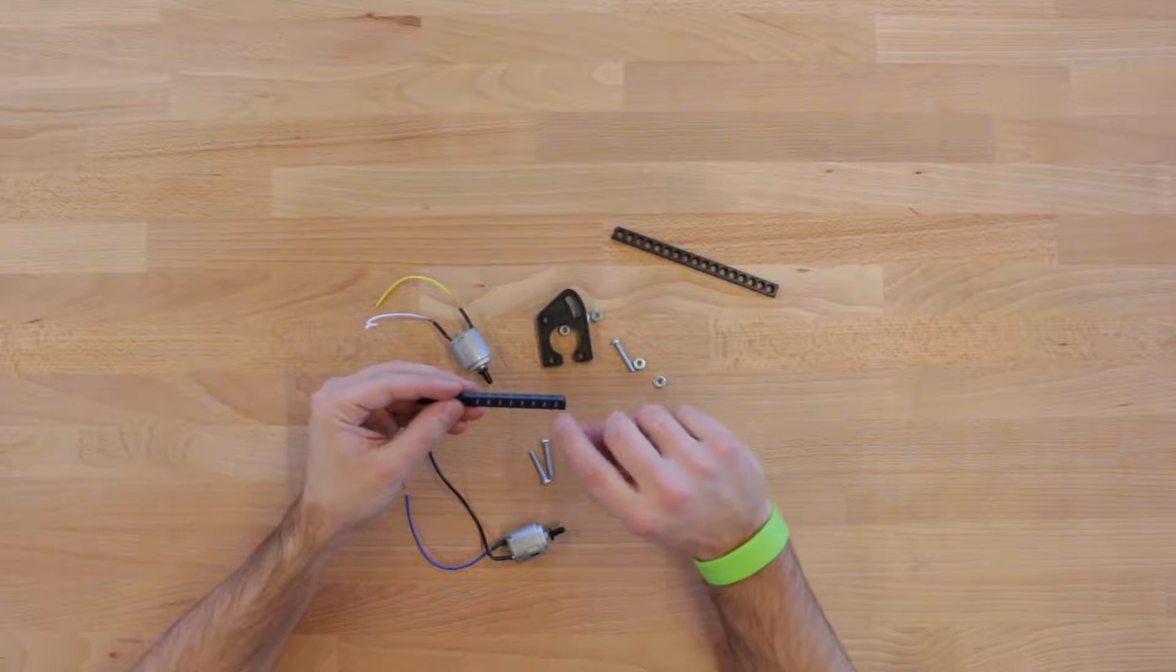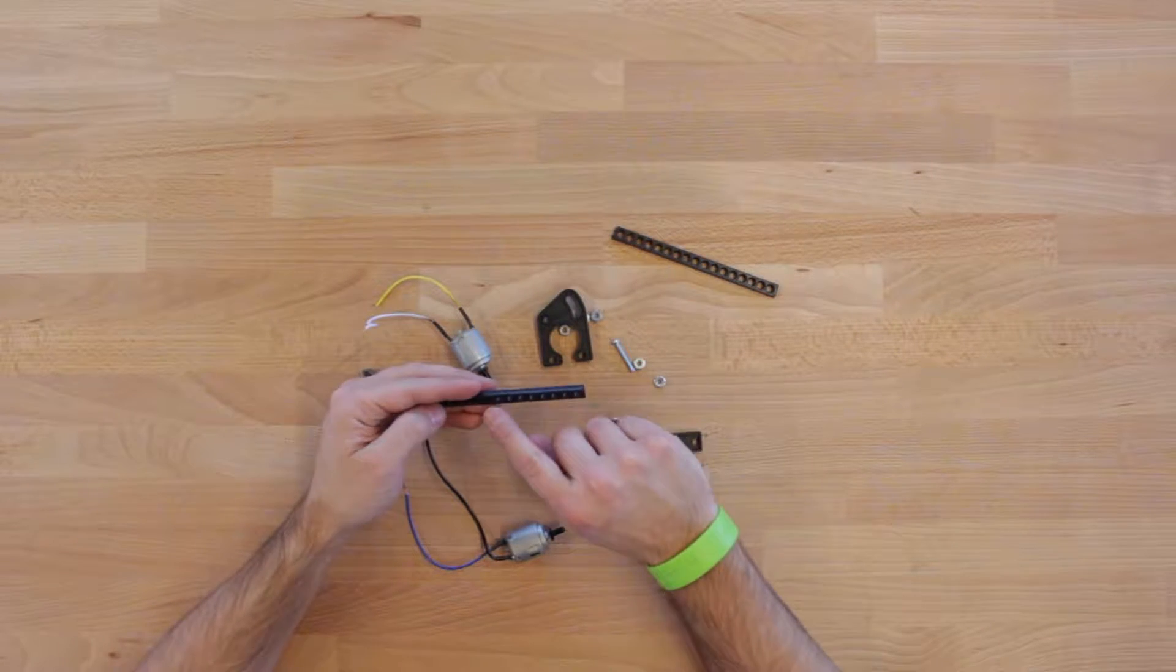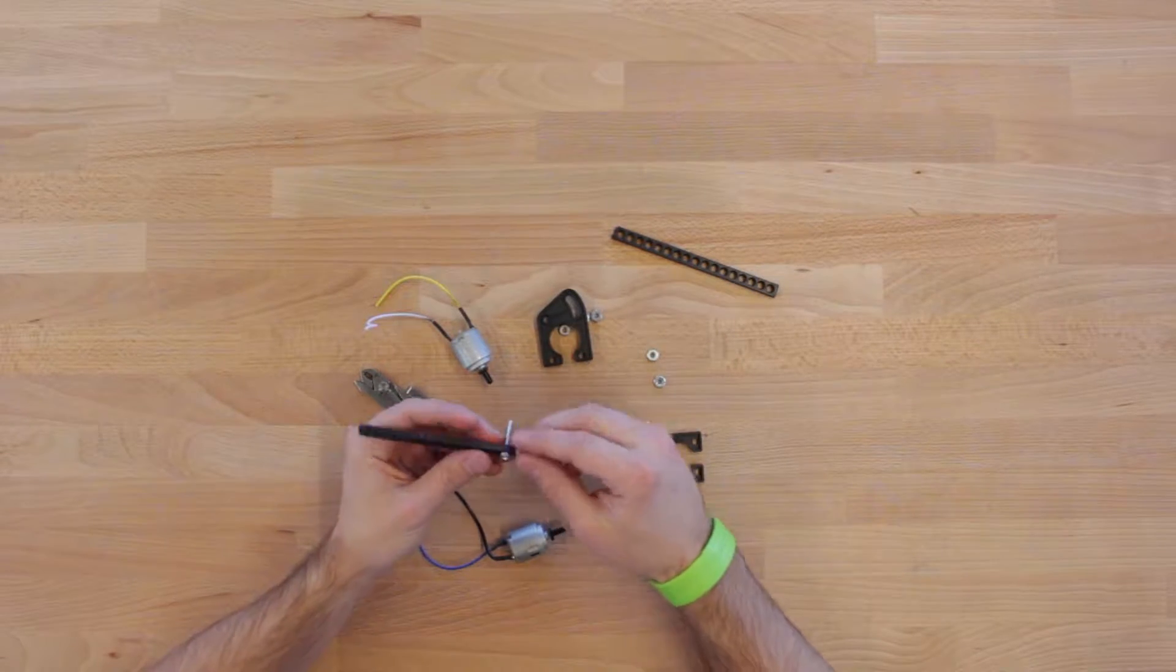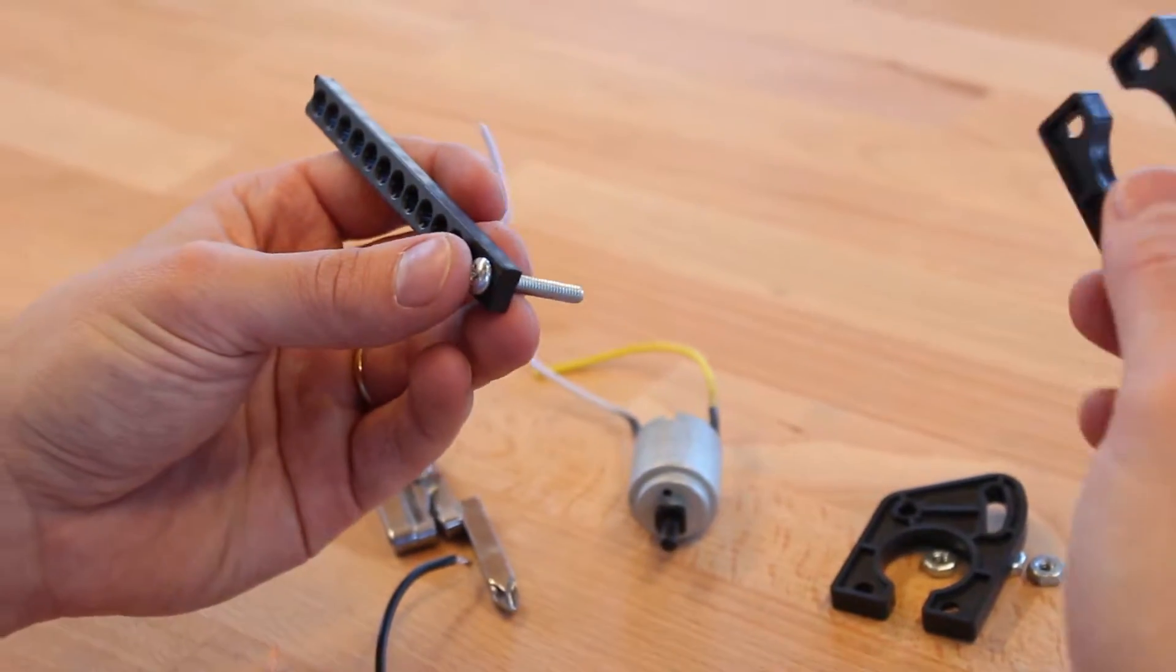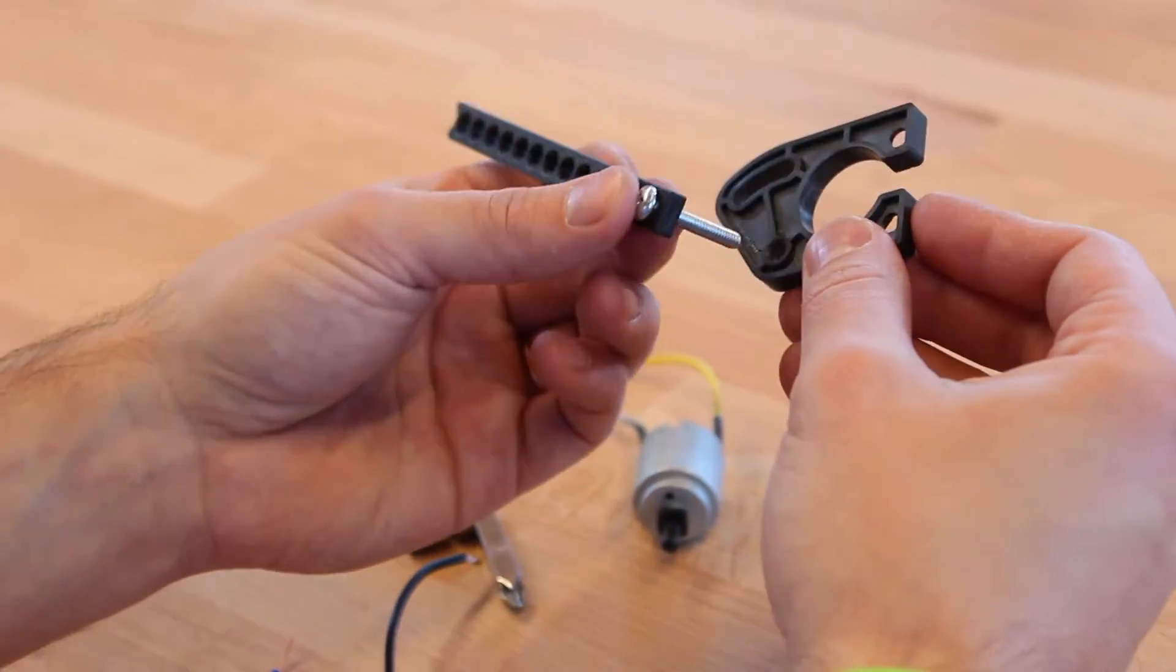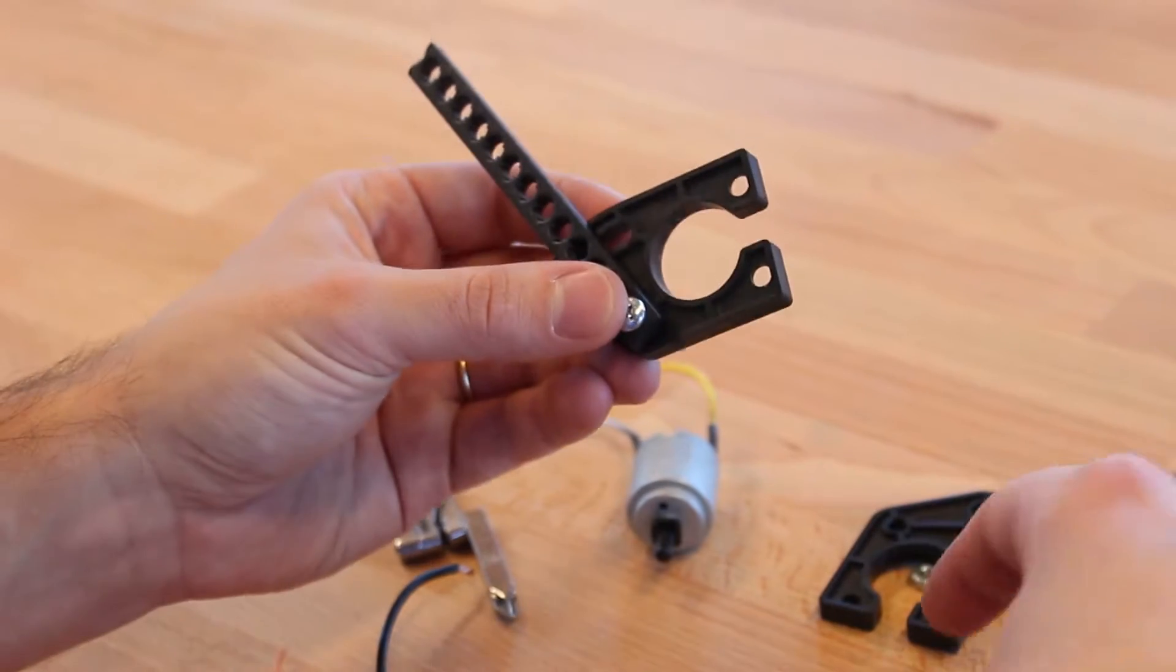First, take our plate with 13 holes in it. Stick a screw through the last hole in the 13-hole plate. Then install the motor mounting plate on that screw. Be sure to stick the screw through the hole in the plate, not the slot. Then install a screw through that slot.